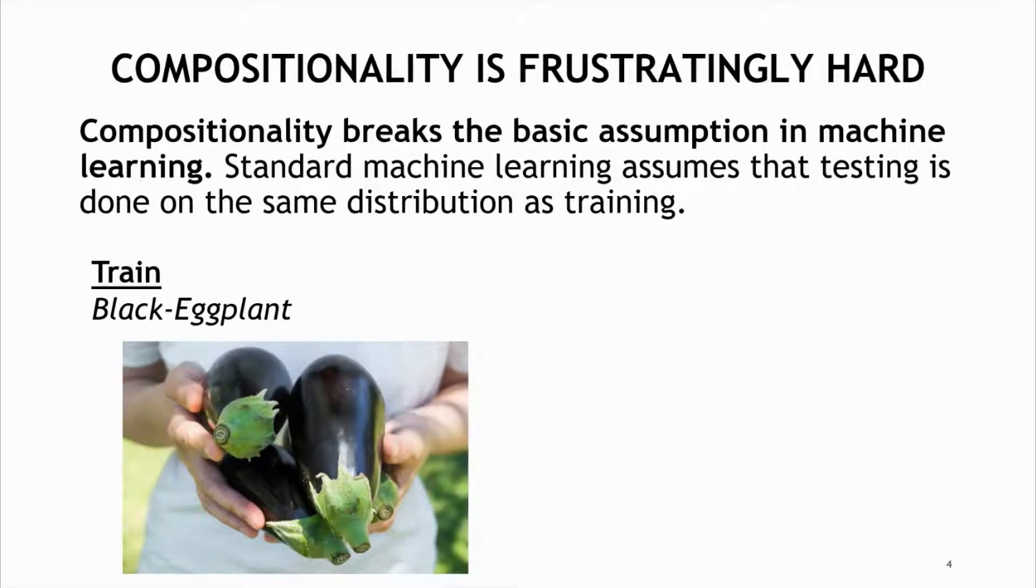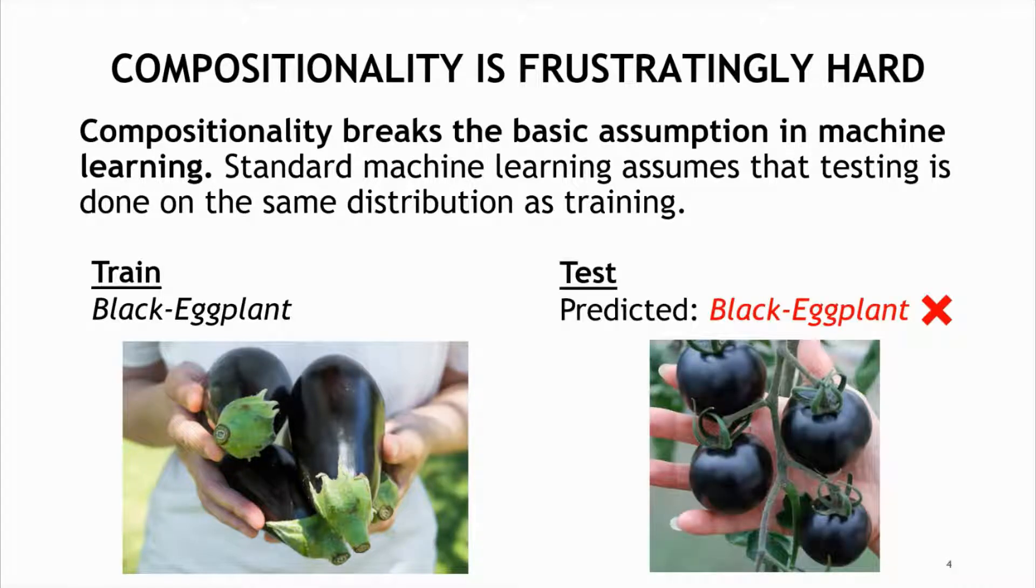For example, if training did not include any black tomato, but did include black eggplants, models tend to learn that black is predictive for an eggplant and make an incorrect prediction, predicting the tomato as an eggplant.